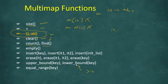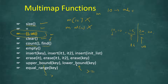lower_bound means greater than or equal to. So if we have keys 10, 10, then 15, then 20, and we call lower_bound(15), it will return an iterator to 15. upper_bound means strictly greater than, so upper_bound(15) returns 20. If we call lower_bound(17), the smallest value greater than or equal to 17 is 20, so lower_bound returns 20. upper_bound(17) also returns 20, so these can be equal or unequal depending on the data.